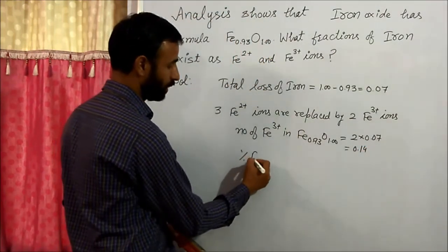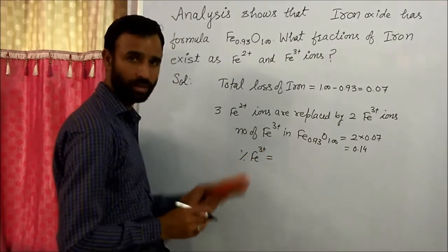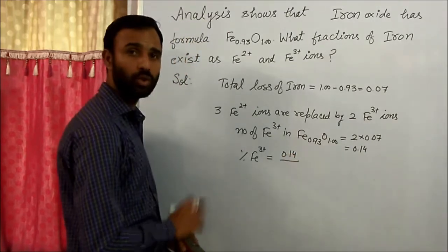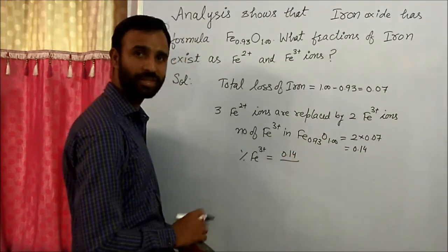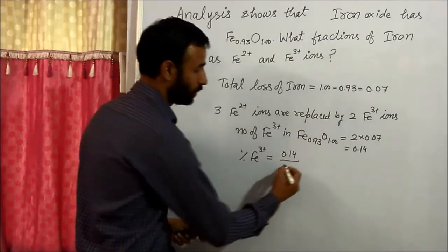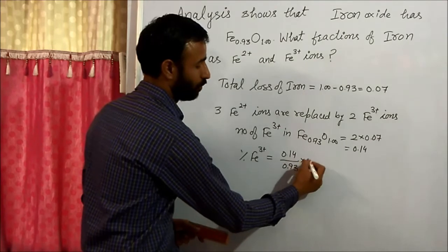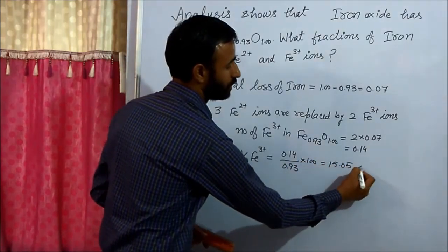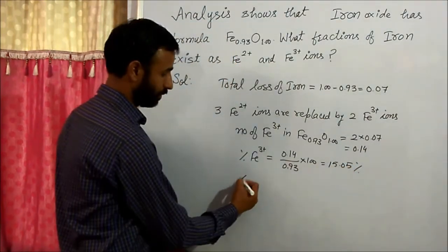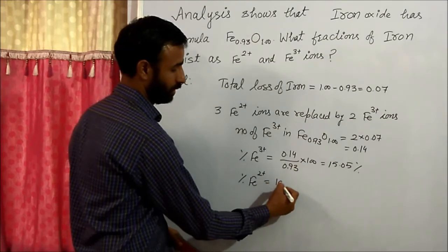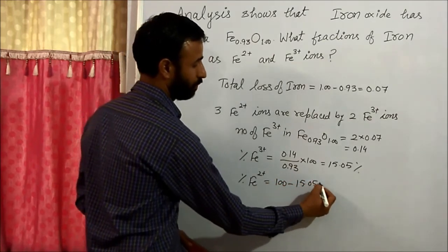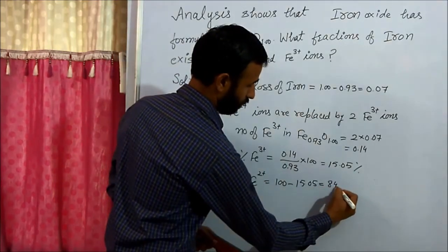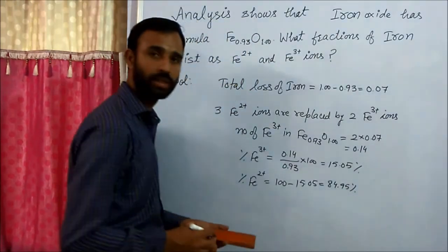So what is the percentage of Fe³⁺? Fe³⁺ = 0.14 and total iron = 0.93, so percentage of Fe³⁺ = (0.14 / 0.93) × 100 = 15.05%. Therefore, the percentage of Fe²⁺ is 100 − 15.05 = 84.95%. That is it.